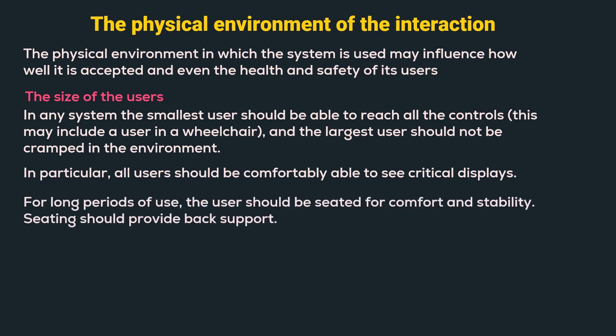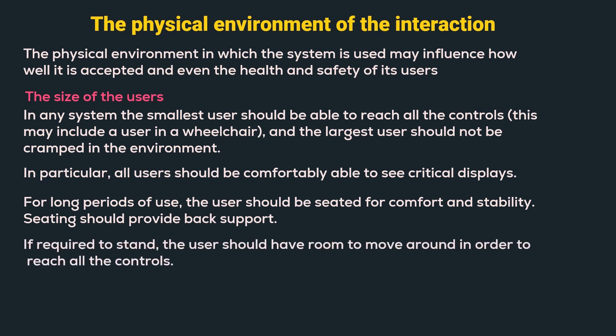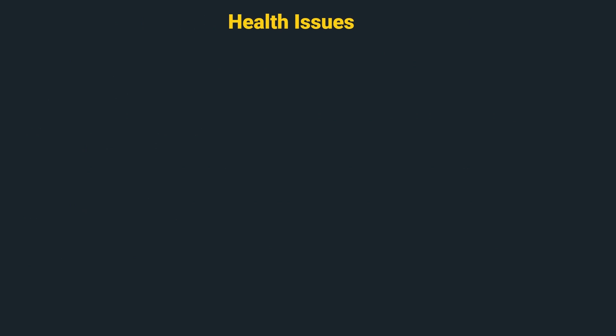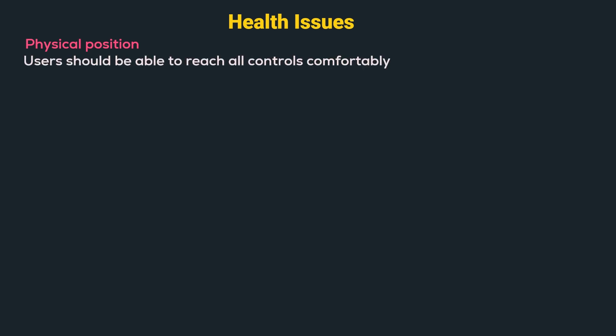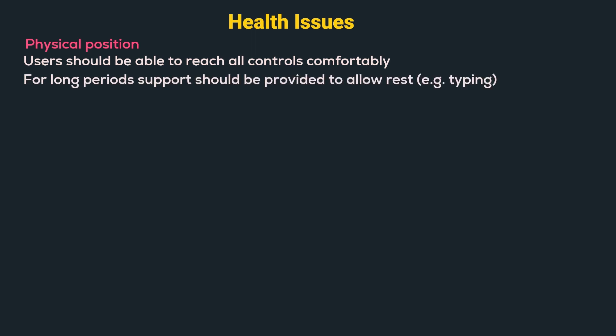For long periods of use, the user should be seated for comfort and stability. Seating should provide back support. If required to stand for longer durations, the user should have room to move around to reach all the controls. The next issues are health issues addressed by ergonomics. The first is physical position — for long periods, support should be provided to allow rest, for example wrist support while typing.